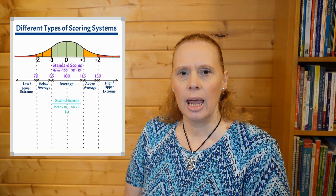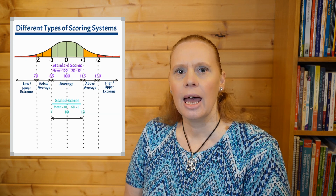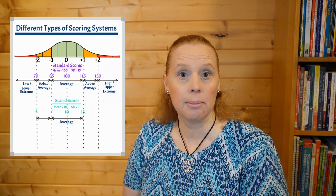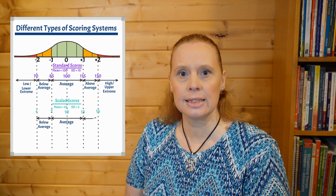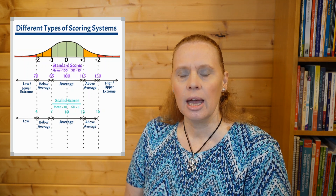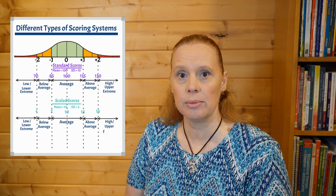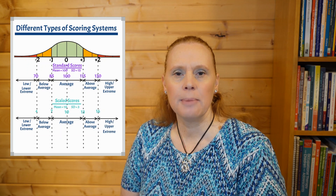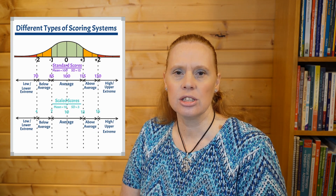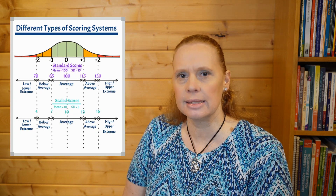Another common scoring system is scaled scores. Scaled scores typically have a midpoint of 10 and a standard deviation of 3. So in this scoring system, any score between 7 and 13 would fall within the average range. Scores between 4 and 6 are in the below average range. Scores between 14 and 16 are in the above average range, and scores below 4 are in the lower extreme and scores above 16 are in the upper extreme range. We can talk about many different scoring systems, but once we know where the midpoint and the standard deviations are, we can make sense of each system in the same way.